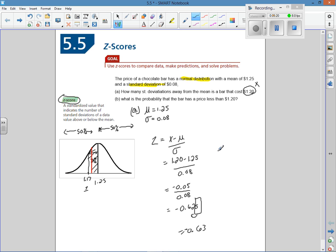So the probability is 0.2643. That was question B: what's the probability the bar has a price less than $1.20?